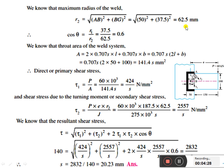Then cos θ equals R1 divided by R2, which is equal to 0.6. We know that the throat area of the weld system, A equals 2 × 0.707s × l plus 0.707s × b.